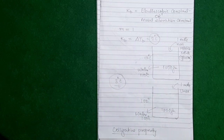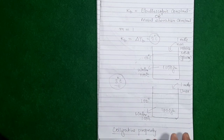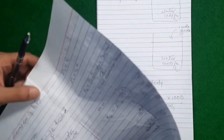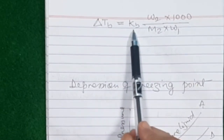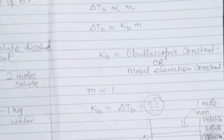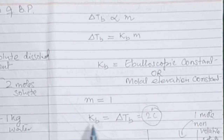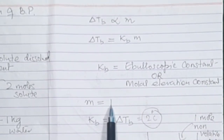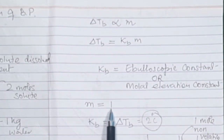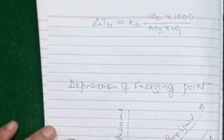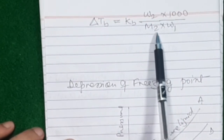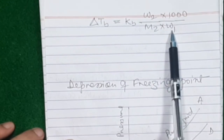Now let me expand this formula of Raoult's law on elevation of boiling point. Raoult's law directly proposes proportionality to molality, then when you make it equal you put the ebullioscopic constant Kb. Molality is then replaced with its actual formula: delta Tb = Kb × (w2 / m2) × (1000 / w1). This is the expanded form of Raoult's law on elevation of boiling point.